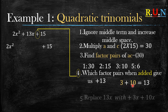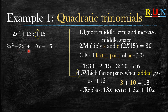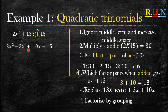Once you have found your factors — in this case 3 and 10 — you replace the 13x with positive 3x plus 10x in the space you created. Because 3 plus 10 equals 13, this is the same as that. From here you factorize by grouping, because now you have four terms.